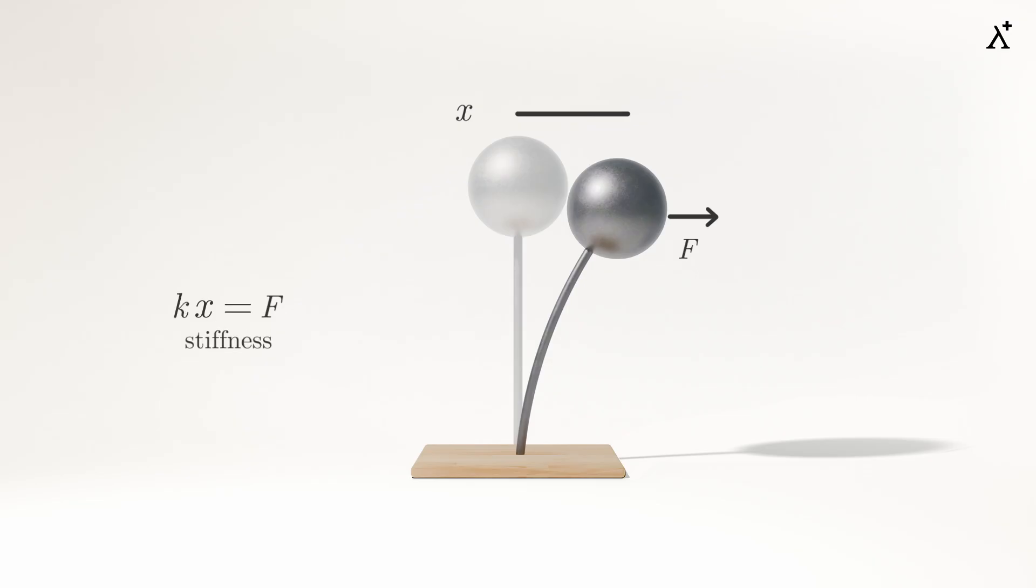For a time-dependent load, inertial forces due to mass of the ball come into picture that act in the opposite direction of the movement. For the sake of simplicity, we have ignored damping of the system.